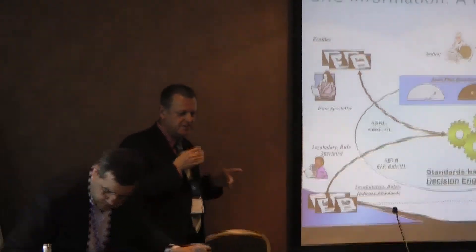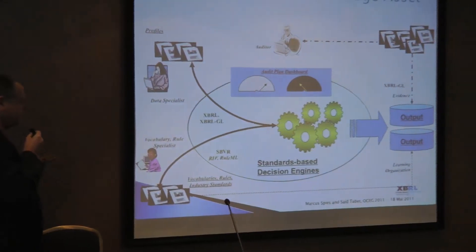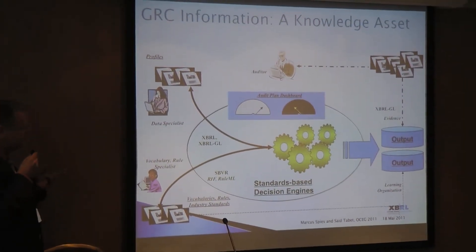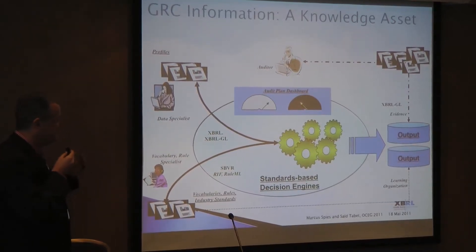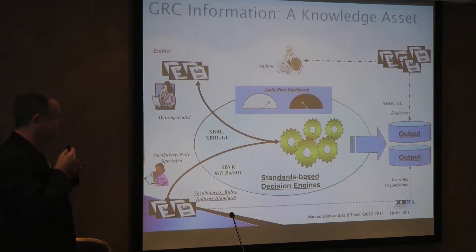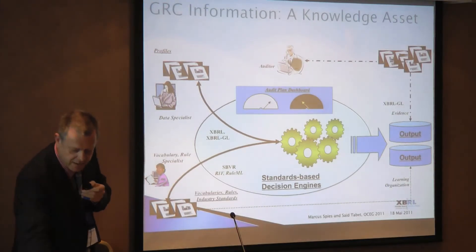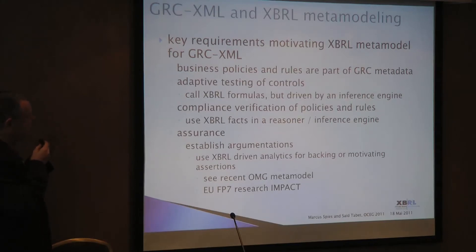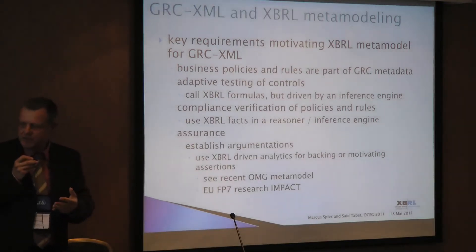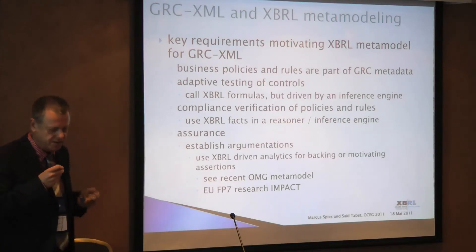The notion of a knowledge asset involves the semantics of business vocabularies and rules. The basic idea is to fully exploit and process GRC data using metadata. We need a representation amenable to semantic technology processing — or more generically, artificial intelligence procedures. Looking at issues where we'd like XBRL data to become more interoperable, one possibility is to build a suitable meta-model that goes beyond the XML schema, as was discussed this morning in the meta-modeling session.